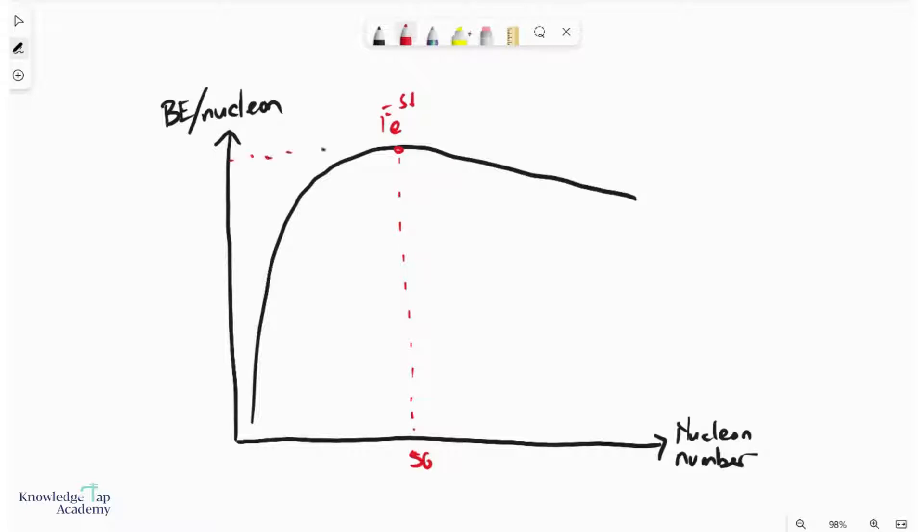So I'm just going to put this down here: 56, this is iron-56. The binding energy per nucleon of iron-56 is about 8.8 MeV. Think of this as nucleon for nucleon—the one that is most difficult to break apart will be iron-56. You can think of iron-56 as being the most radioactively stable.